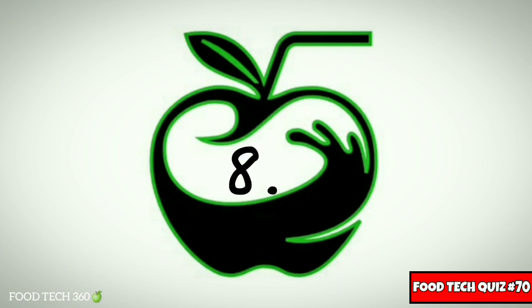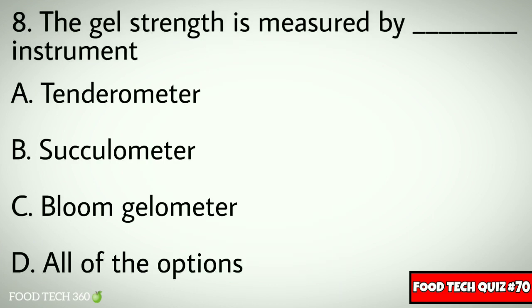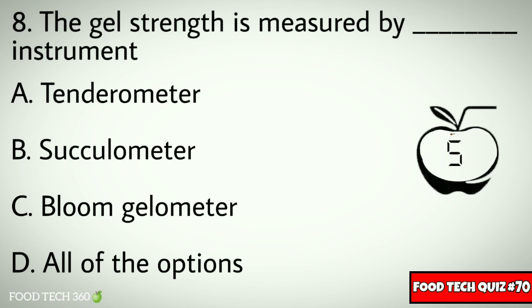Q8. The gel strength is measured by which instrument? Options: A. Tenderometer, B. Circulometer, C. Bloom Gelometer, D. All of the options.